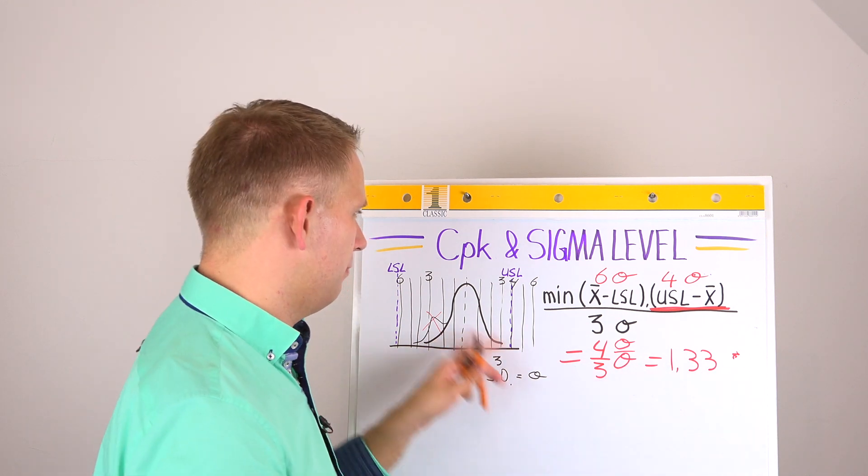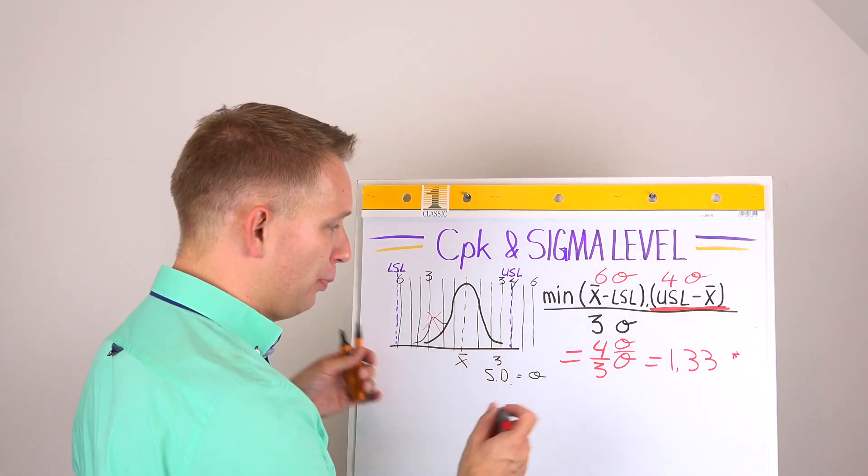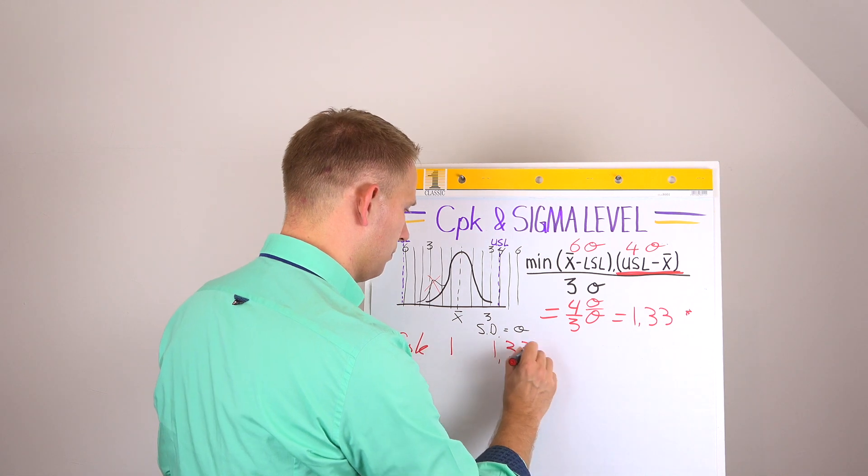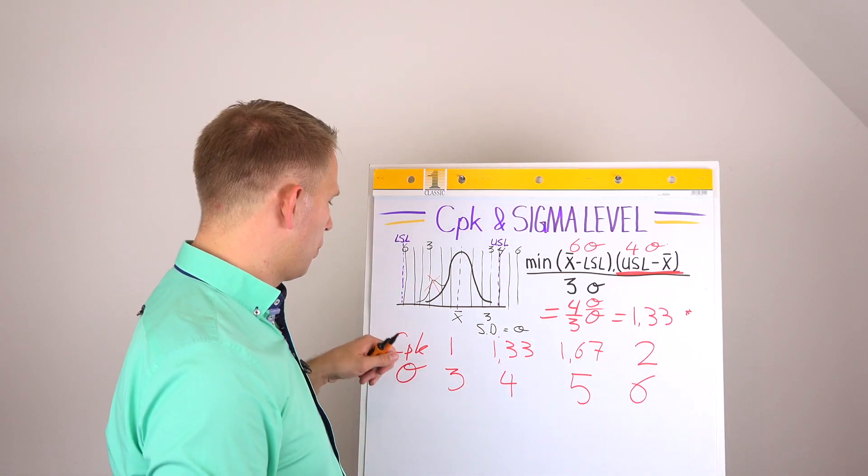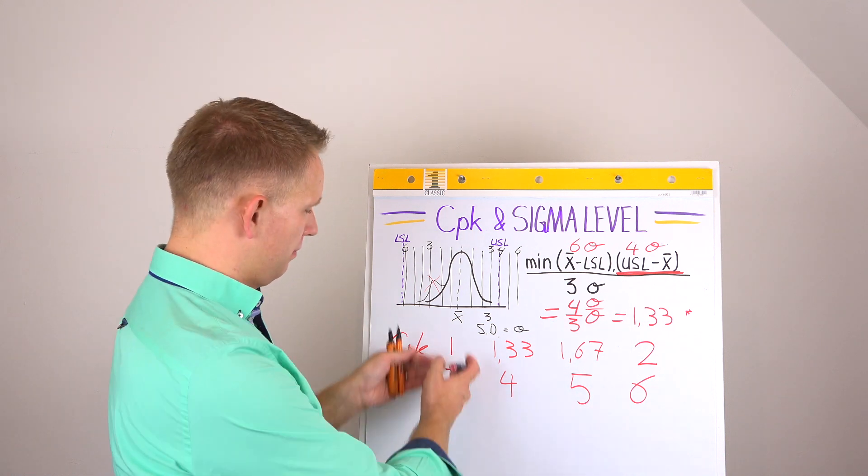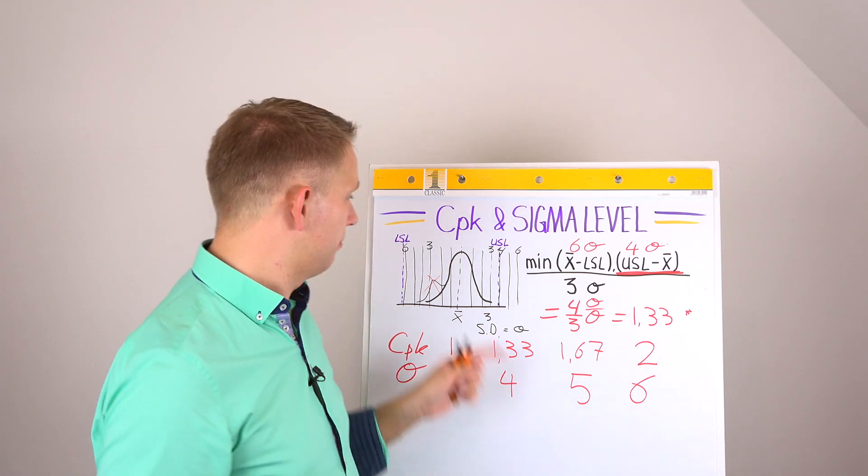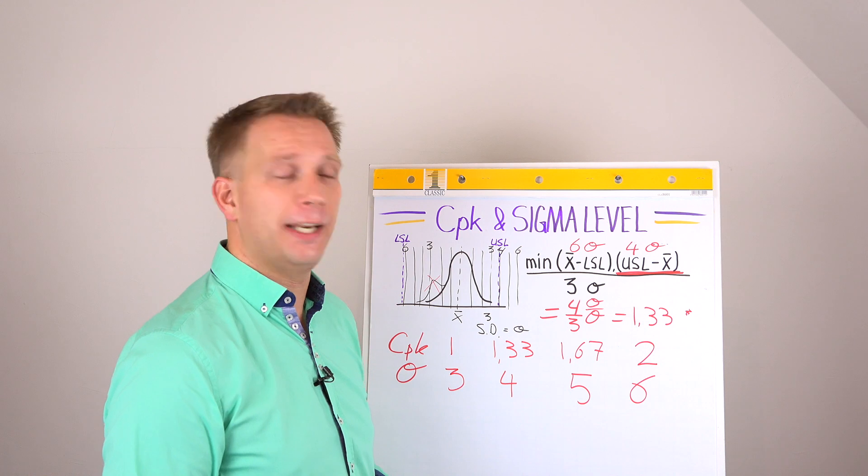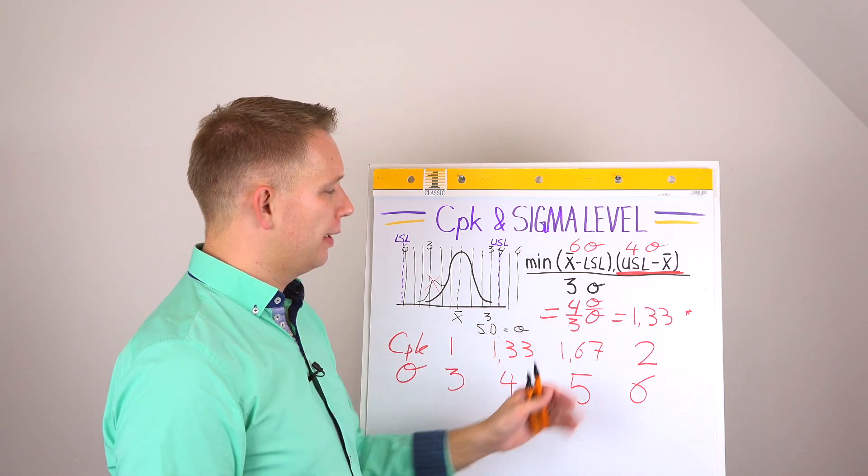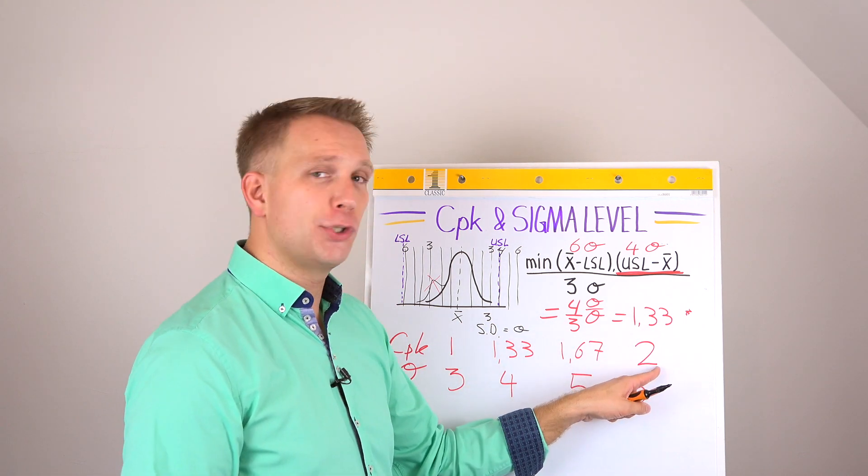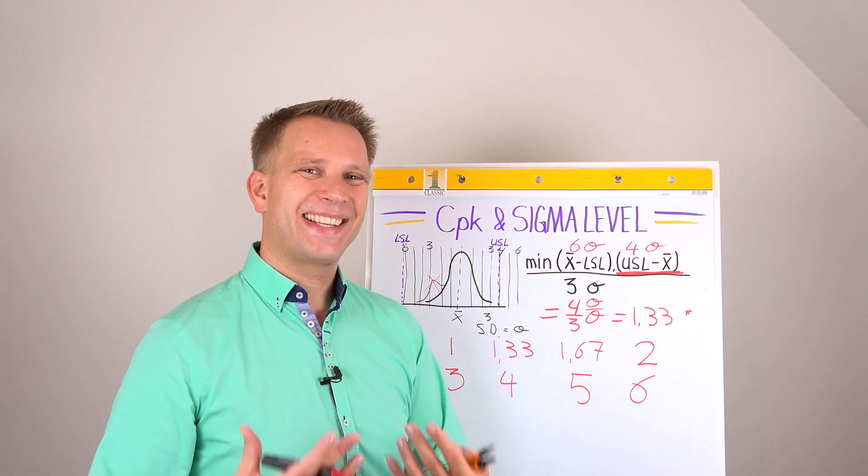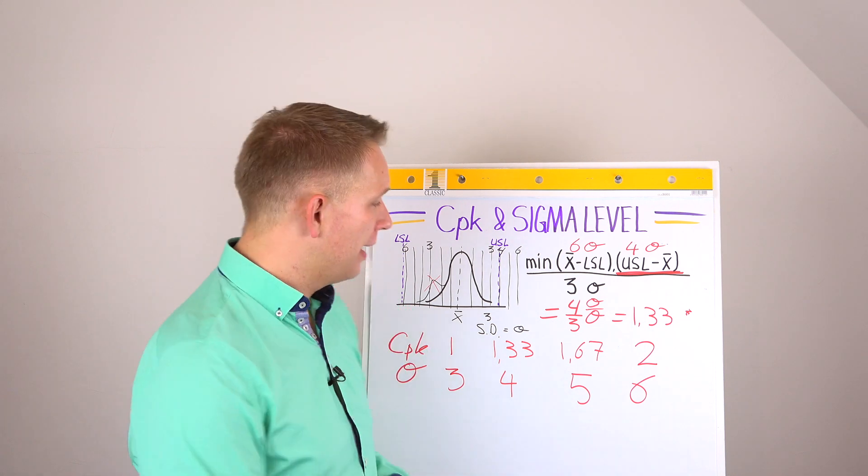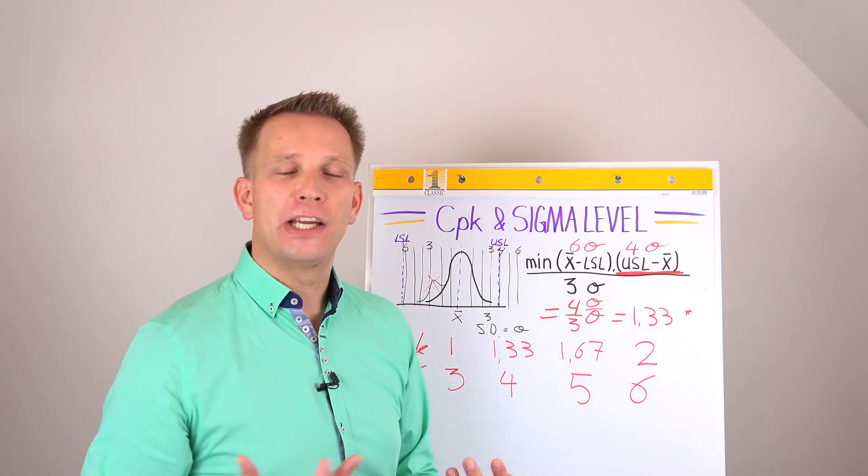And basically, it goes like this, and we'll put them down. Basically, a CPK of 1 is 3 sigmas between the limit and the mean. 1.33, 1.67, and a CPK of 2 is 6 sigma. So when we are talking about a 6 sigma process, it is the same as a CPK of 2.